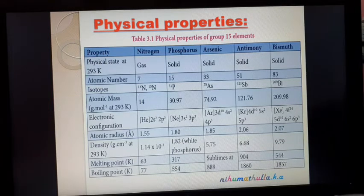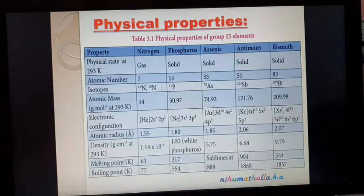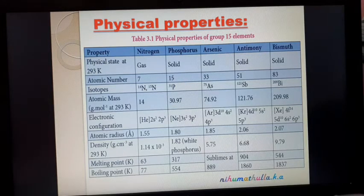Isotopes: nitrogen has two isotopes — nitrogen-14 and nitrogen-15. Phosphorus: 31. Arsenic: 75. Antimony: 121. Bismuth: 209.